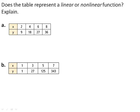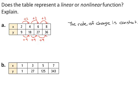Does the table represent a linear or nonlinear function? Explain. Part A. As x increases by 2, y increases by 9. So the rate of change is constant. And because a linear function has a constant rate of change, the function is linear.